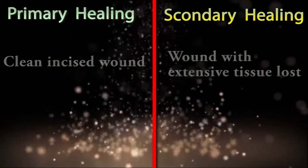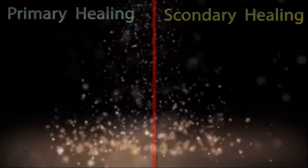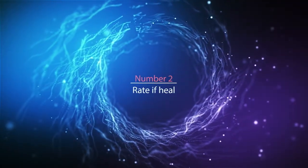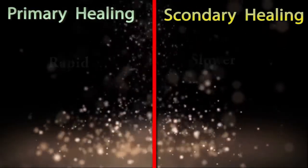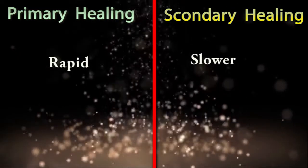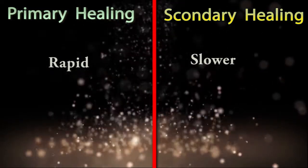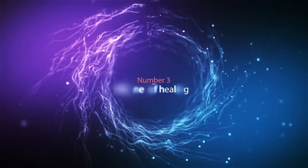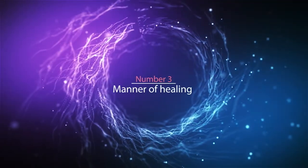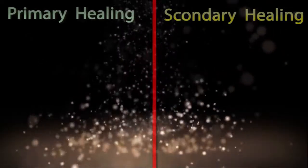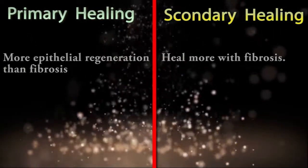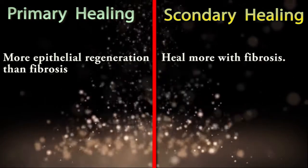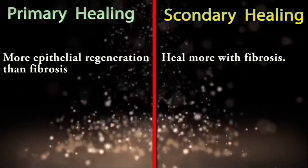Difference number two is rate of healing: the primary healing process is always more rapid than the secondary healing process. Difference number three is manner of healing: more epithelial regeneration than fibrosis can be seen in primary healing, but in secondary healing,